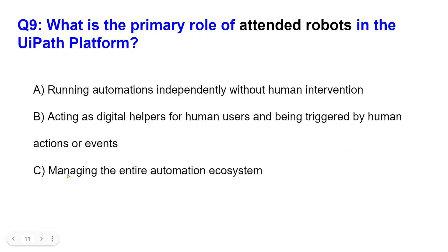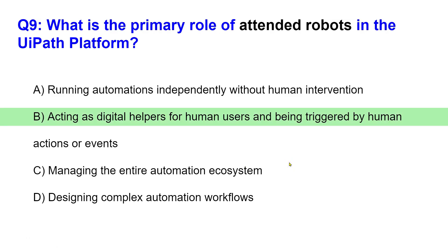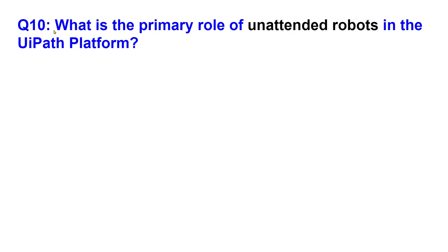Option C: managing the entire automation ecosystem. Option D: designing complex automation workflows. Please write your answer for question 9. The right answer is B — acting as a digital helper for human users and being triggered by human actions or events.